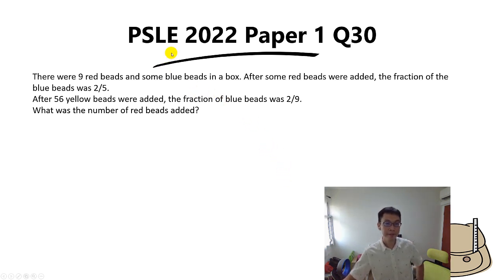Hi everyone, this question is from the PSLE 2022 Paper 1 Question 30. This question is pretty confusing to quite a number of students, so let's go through this question and see whether you can get this right. There were 9 red beads and some blue beads in a box.